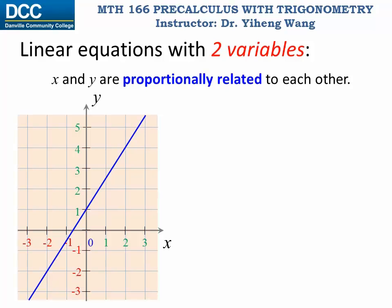This type of linear equations has a general form like this, ax plus by plus c equals to 0. In this equation, a and b are both non-zero real numbers, and c can be any real number. The key point is x and y are both to the first order.